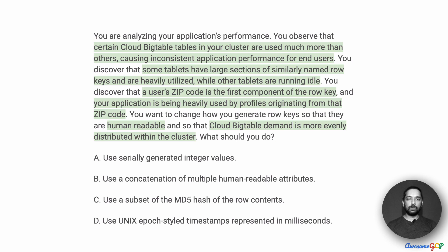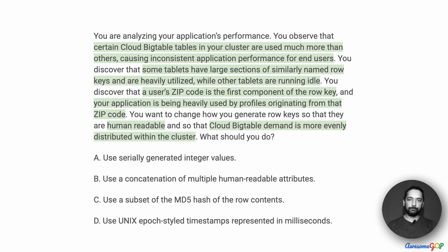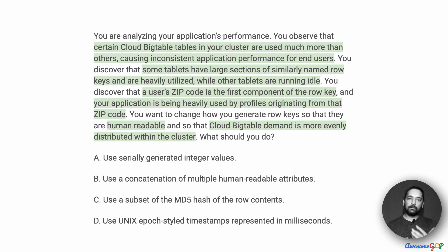In this interesting scenario, you already realize that there is a performance problem with Cloud Bigtable. We also see that the way we design the row key with the zip code at the beginning is probably the cause of the issue — certain parts of Bigtable are heavily utilized while others are underutilized or idle. In our redesign, we want the keys to be human readable and to spread the load evenly across Cloud Bigtable.